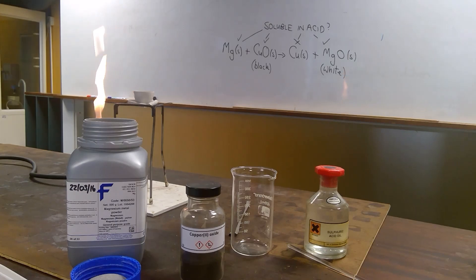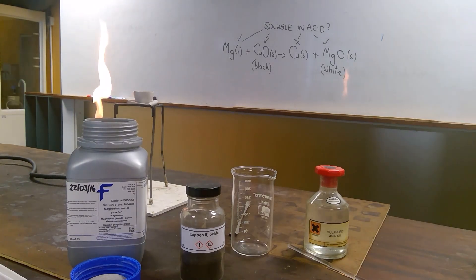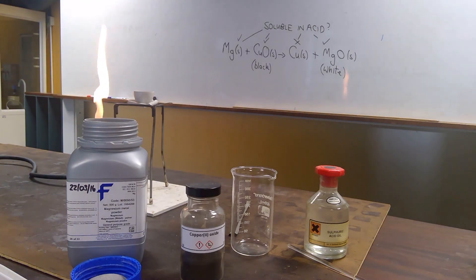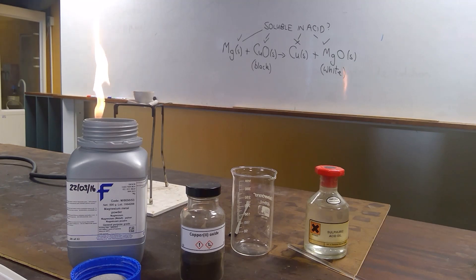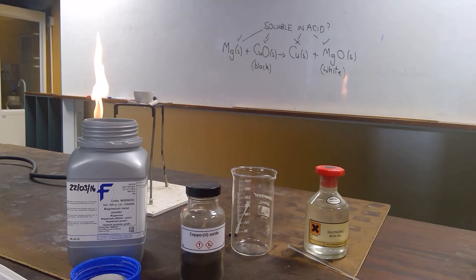The magnesium is higher in the reactivity series and reacts with the copper oxide to displace the copper. The magnesium becomes magnesium oxide, which is a white powder, and the copper oxide, the black powder, becomes copper, which is the red-brown copper-coloured solid.